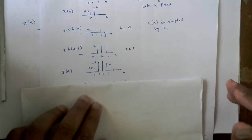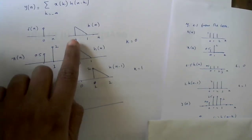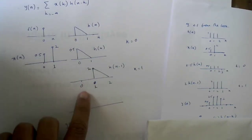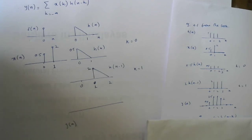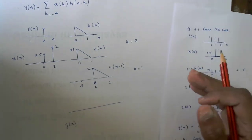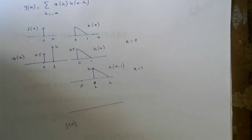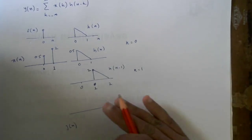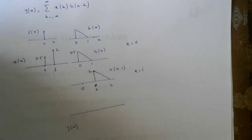So this is one way to look at convolution: you keep shifting h(n) and scaling it with the corresponding value of x(k). When you shift h(n) by k, you scale it by x(k), then sum over all values of k to get the final y(n). That is one way to look at convolution. We will also see another, slightly easier way to compute convolutions — especially by hand — and we will see that in a few minutes.